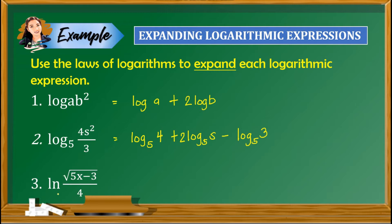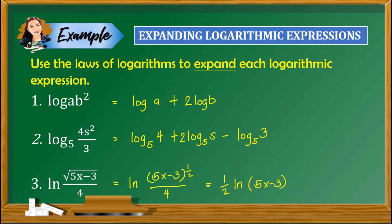Item number 3: we have ln of the square root of (5x minus 3) over 4. To apply the laws of logarithms, we rewrite the radical in exponential form: ln of (5x minus 3) raised to the power of 1/2, all over 4. In the numerator, applying the law of a power gives 1/2 times ln of (5x minus 3) — we do not separate 5x and 3 because both are raised to 1/2, so we consider this one term. Applying the law of quotient for the denominator gives minus ln of 4.